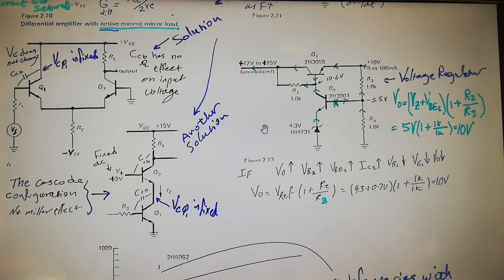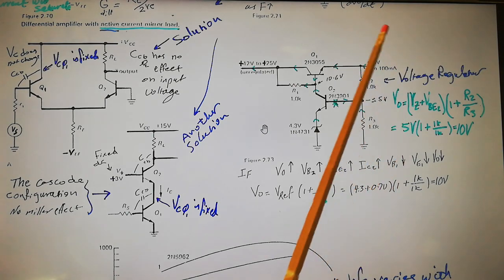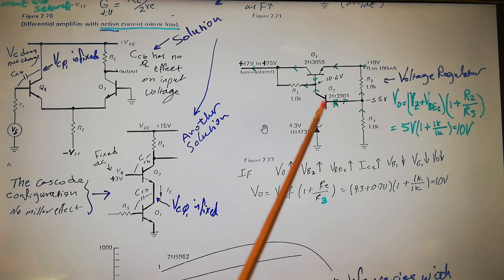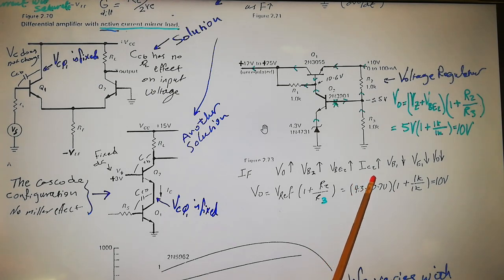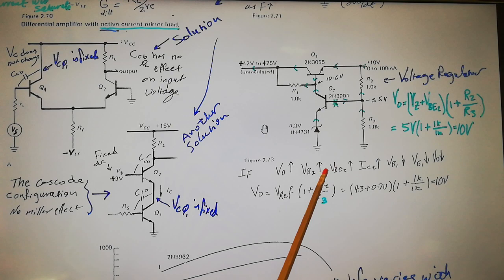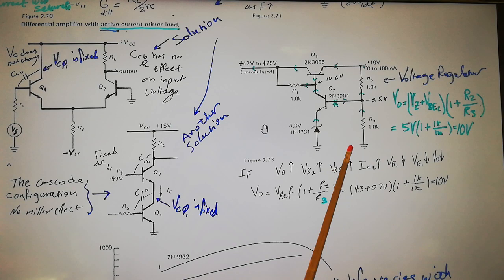Separating the tasks — one transistor for the signal, the other for the load — is the solution for the Miller effect. This brings us to something very interesting: a very basic voltage regulator. I believe I built this circuit for my first 50-watt amplifier, which was about 44 years ago. That voltage regulator was for the pre-amplifier of that amplifier.